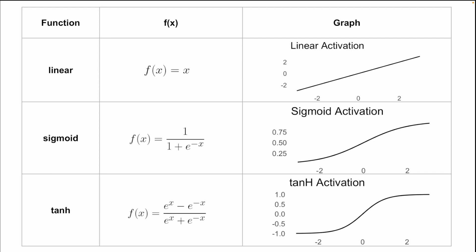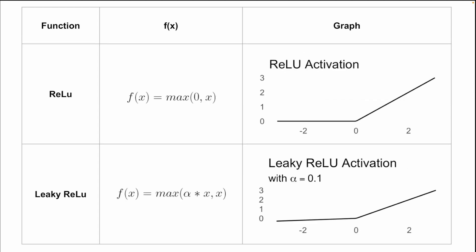Next, we have a similar activation function called the tanh function. Like the sigmoid activation function, tanh squishes all of our input values into outputs that are between an upper and a lower bound. However, the bounds this time are between negative one and positive one.